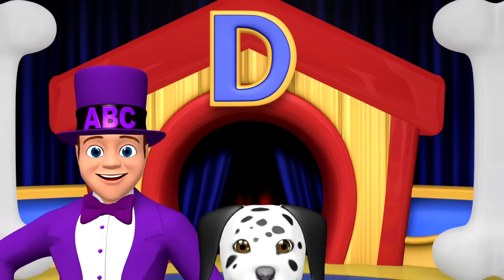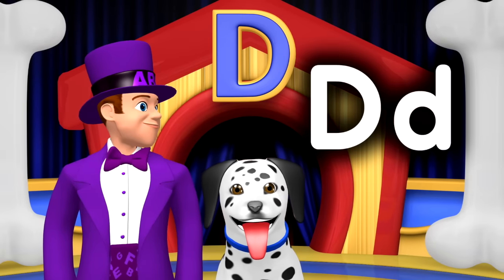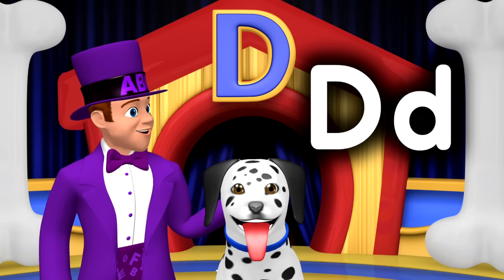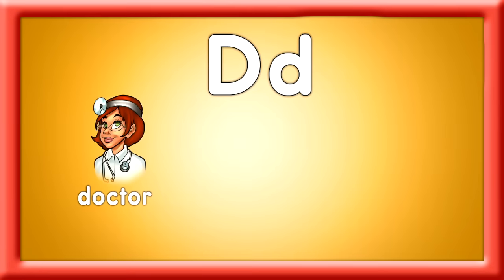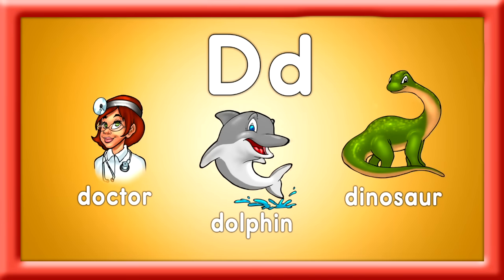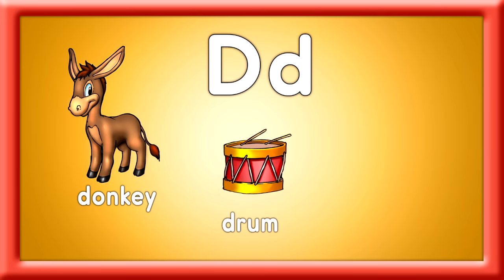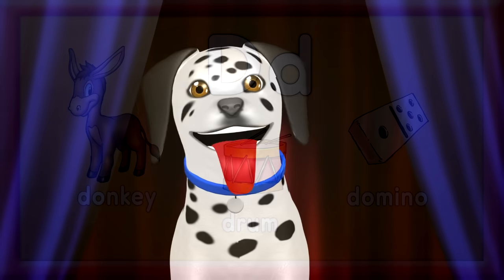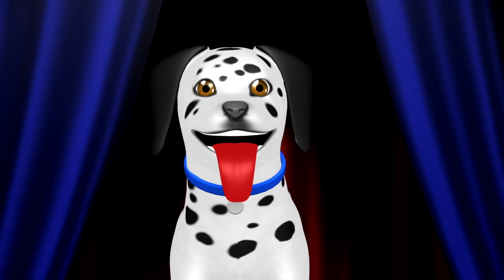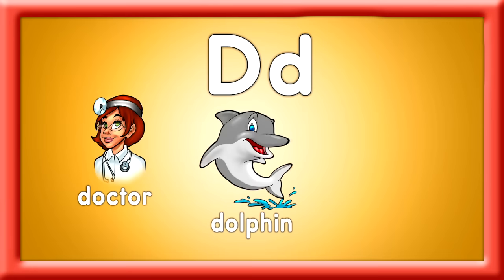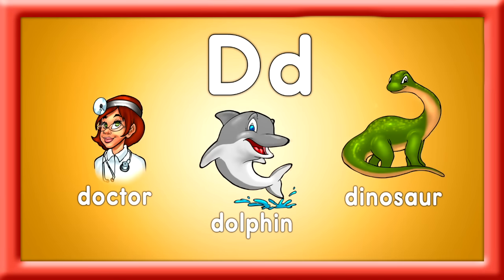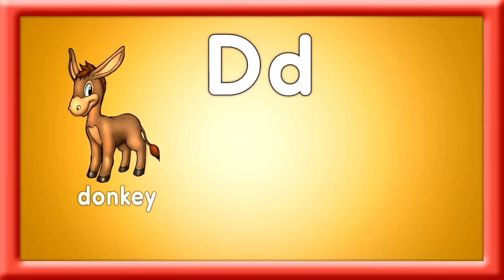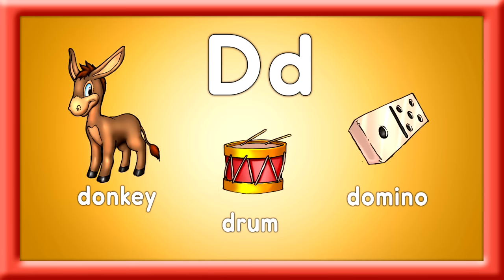That was delightful. There's a capital D and a lowercase d. Dr. Dolphin and dinosaur. Sing these D words and learn some more. Donkey, drum, and domino are more D words that you now know. Dr. Dolphin and dinosaur. Sing these D words and learn some more. Donkey, drum, and domino are more D words that you now know.